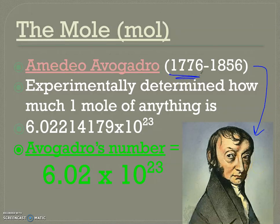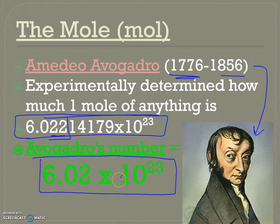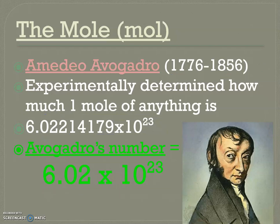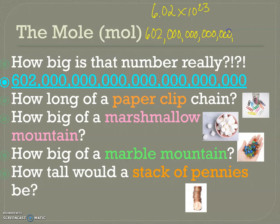So sometimes we have to count using mass, and that's where Amadeo Avogadro comes in. Born in 1776 — around when our country was being developed — he experimentally determined later in his life, in the 1800s, how much a mole of anything was. His number is quite long: 6.022, sometimes taken out to three decimal places, but we affectionately use 6.02 × 10²³. Let's wrap our brains around how big that number is: 6.02 × 10²³ is 602 followed by 21 zeros.